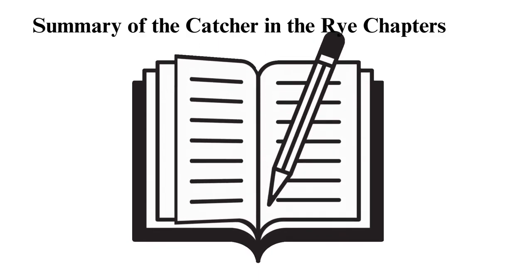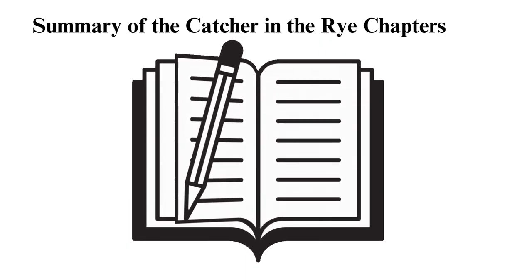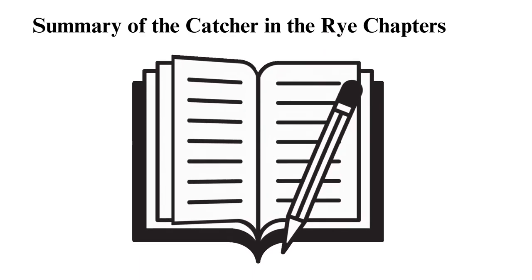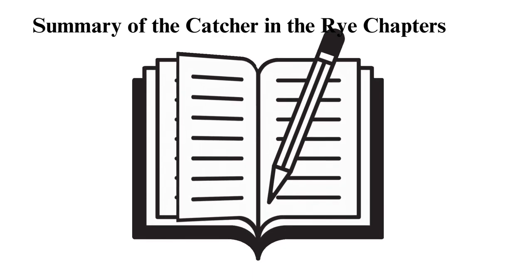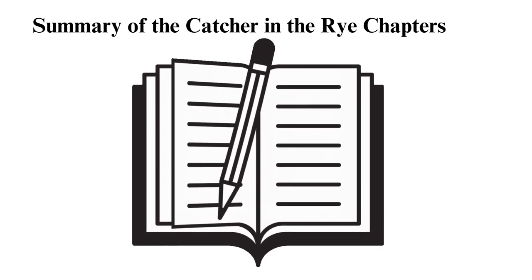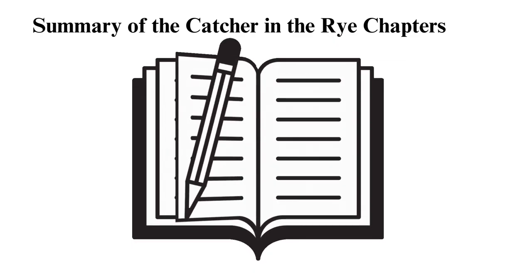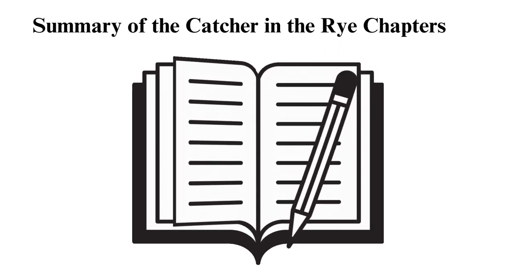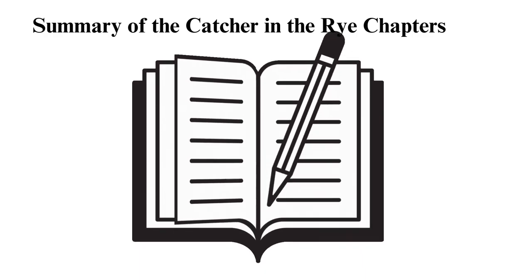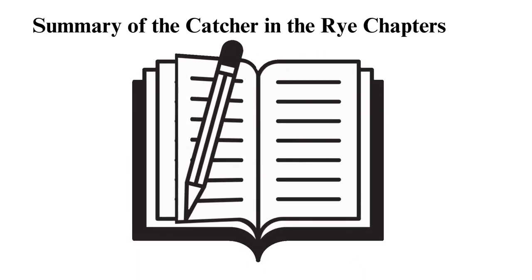The Catcher in the Rye Chapters 11-20 Summary. Holden struggles with loneliness and alienation. He learns that his roommate Stradlater is dating Jane, a girl he treasures so much. They were neighbors and spent summer time together and formed a close friendship. He decides to visit the town with his friend to watch a movie to fight his disappointments, and also invites Ackley and Mal along. On arriving, Ackley and Mal realize they have already watched the movie, so they eat hamburgers.